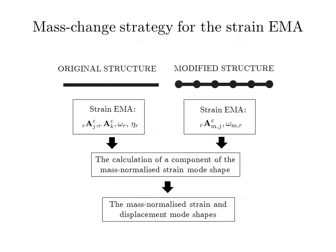The mass normalization procedure is performed as follows. First, the strain experimental modal analysis is performed on the original structure to obtain the natural frequencies, the damping, and the unnormalized displacement and strain mode shapes. Then, the structure modification by mass adding follows. Next, the strain experimental modal analysis is performed on the modified structure to identify the natural frequencies and displacement mode shapes of the modified structure. Then, one component of mass normalized strain mode shapes is calculated for all modes of interest. Finally, the mass normalized displacement and strain mode shapes are calculated.